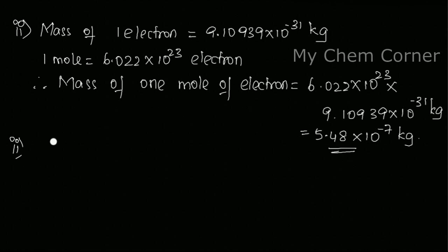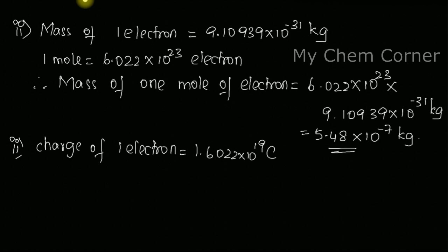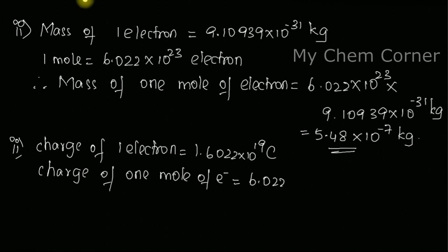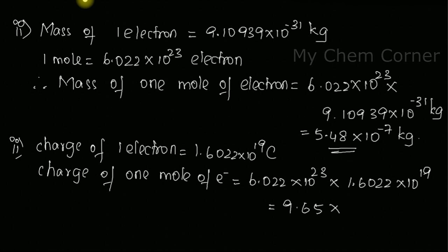We know the charge of one electron is 1.6022×10⁻¹⁹ coulombs. Therefore, the charge of one mole of electrons is calculated the same way: Avogadro's number 6.022×10²³ multiplied by 1.6022×10⁻¹⁹. When we multiply both of these, we get 9.65×10²³⁻¹⁹, giving 9.65×10⁴ coulombs. So this is how you find the charge when they ask for one mole.